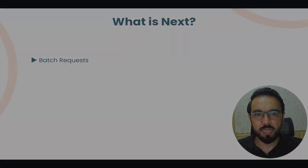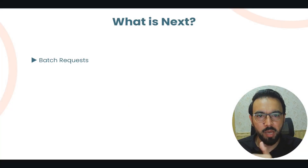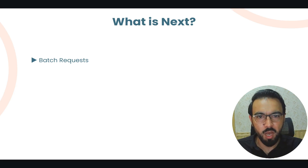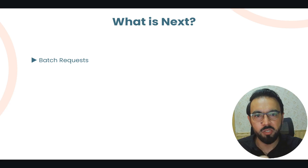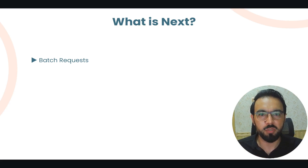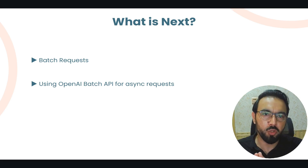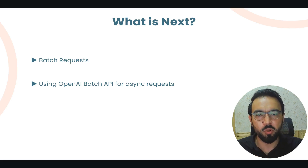In the next video, we are going to discuss how to send a batch of requests to the OpenAI API. If you want to generate more data and need to send multiple requests at the same time, we'll look at how to batch all those requests into just one request, submit it to the OpenAI API, monitor that batch, and retrieve the responses once completed. Using the OpenAI Batch API we will try to send asynchronous requests. See you in the next video.